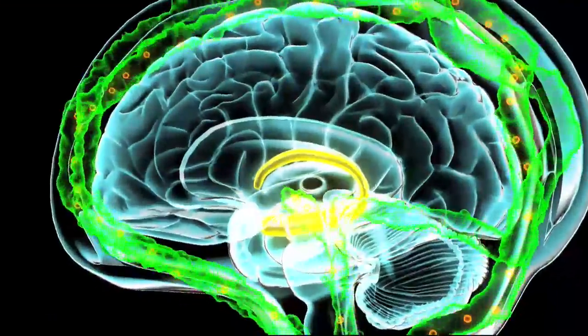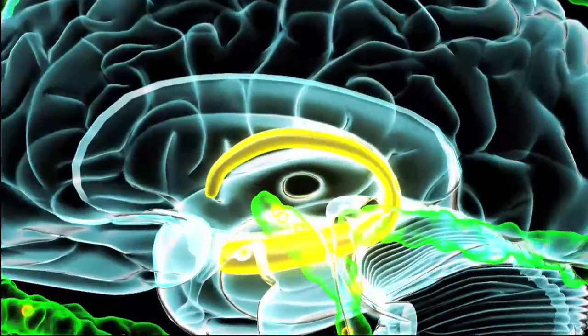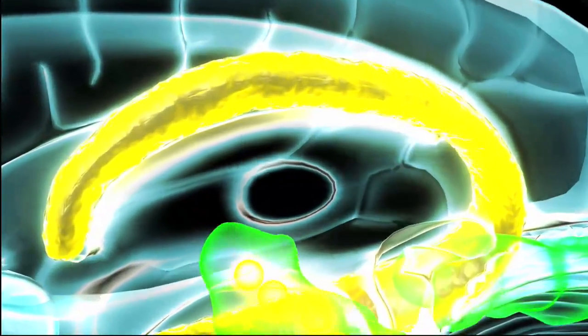The first area in the brain to show this Alzheimer's pathology is the hippocampus, the memory maker of the brain. The clinical result is loss of memory and is followed by loss of other brain functions.